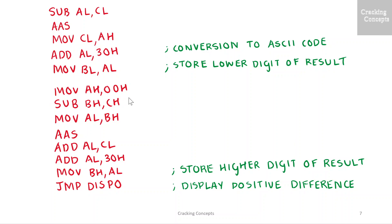I will again clear the value of AH in order to perform the subtraction of higher digits, which are BH and CH. The result is in BH, which I copy to AL in order to perform ASCII adjust. Then I add the value of AH from the previous subtraction along with AL. This final result is converted into ASCII code and stored in the higher digit BH.